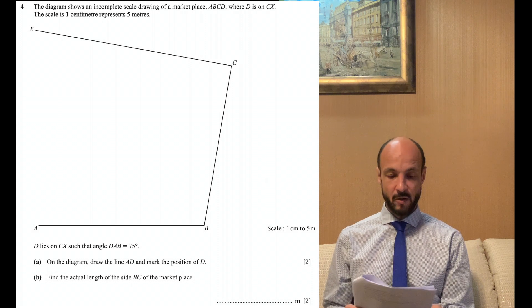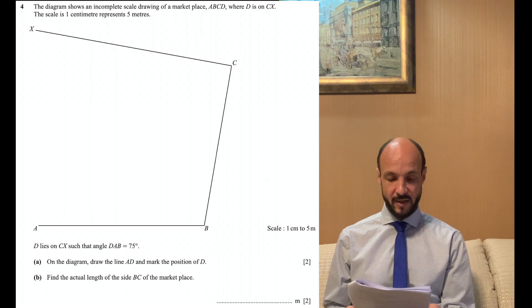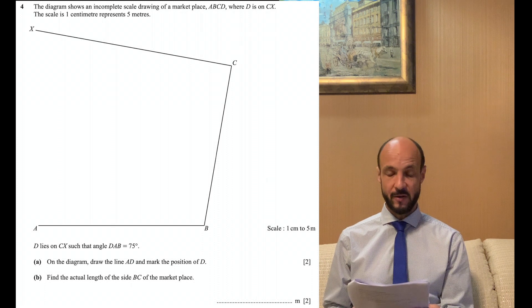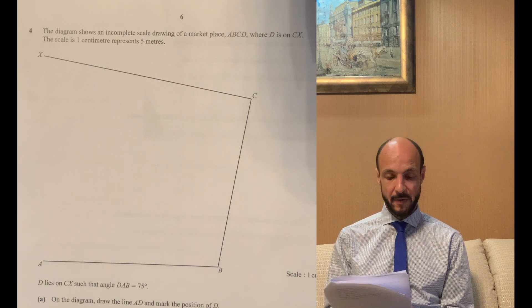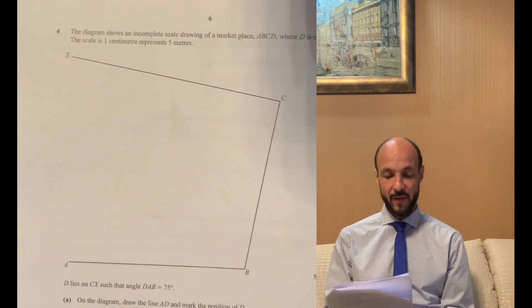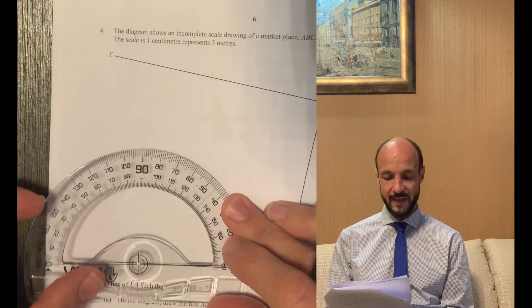Okay, so we've been told that D is on the line CX and that angle DAB equals 75 degrees. Now of course the way angles are written, the letter in the middle is the center of the angle and the two letters on the outside are the arms of the angle. So A is the center of the angle and the arms are B and D.